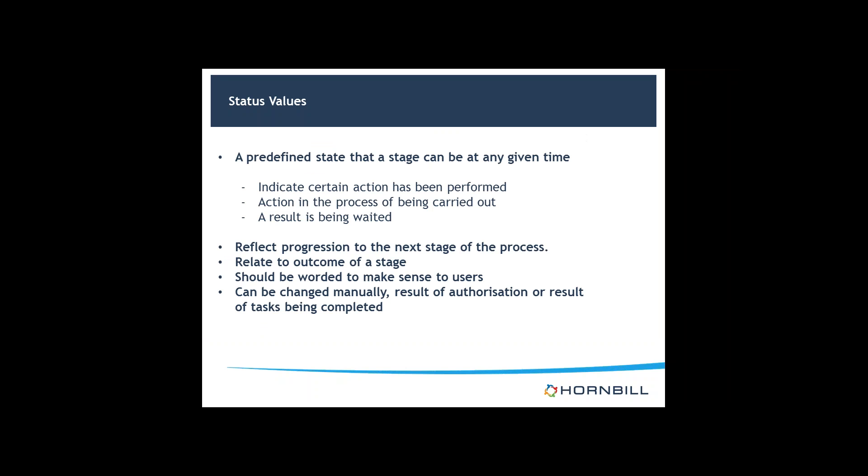The next thing to consider are status values. A status value is a predefined state that a stage can be at any given time. This will indicate to a user that a certain service action has been performed, whether the action is in the process of being carried out, or that some result is being awaited. It should be worded in a manner that makes sense to users in the context of the procedures they are expected to follow. During the lifecycle, status values can be changed manually by authorization or completion of tasks.